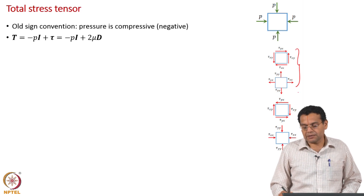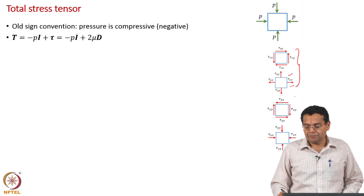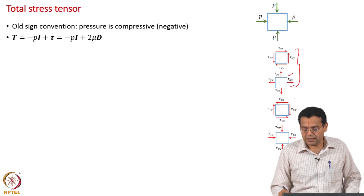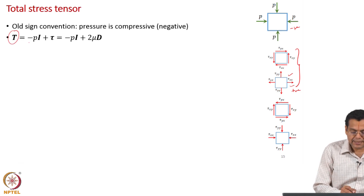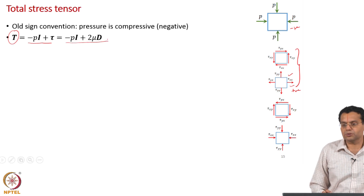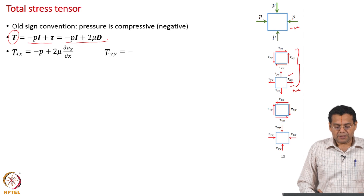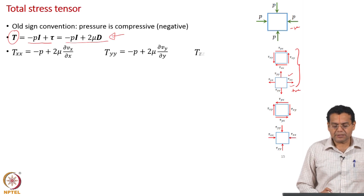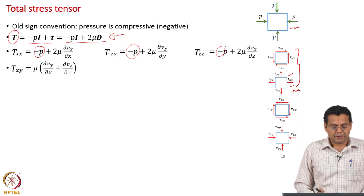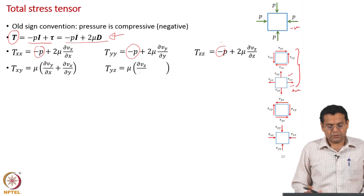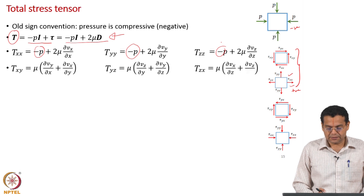These two figures are for the old sign convention. In this case, on a positive face forces along the positive axis means tensile is positive and compression is negative. Pressure is always compressive, so it becomes negative. Therefore the total stress tensor is minus p I plus tau, which is minus p I plus 2 mu d. Writing this in components, simply add minus p to the normal stresses and no other change.